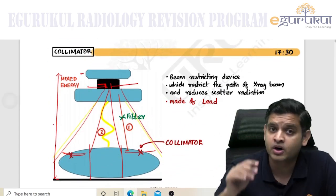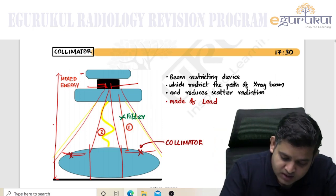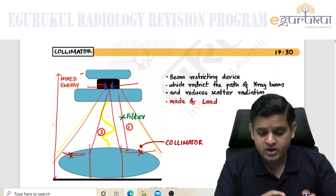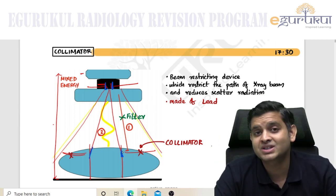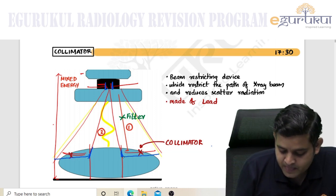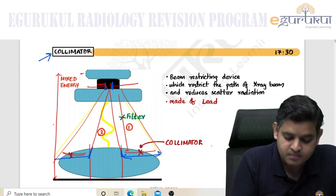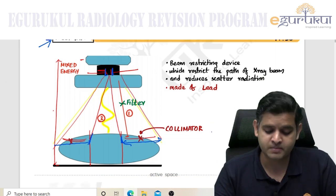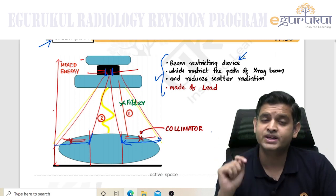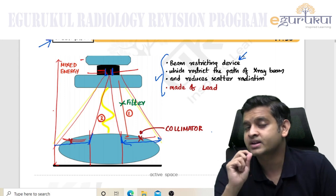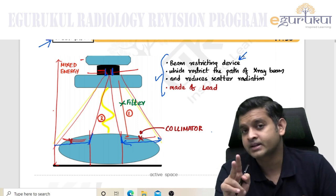Because the beam is diverging, we need a device to restrict its path so that the beam only goes to the part you want to scan. This is done by a collimator. It restricts the path of the beam, thereby decreasing scatter radiation. So the collimator is a beam restricting device which restricts the path of the x-ray beam and thereby reduces scatter radiation.